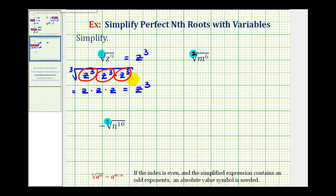The reason why it's z to the third is if we take this simplified expression, z to the third, and raise it to the power of the index, which is three, this does equal z to the ninth — our radicand, or the expression underneath the radical.